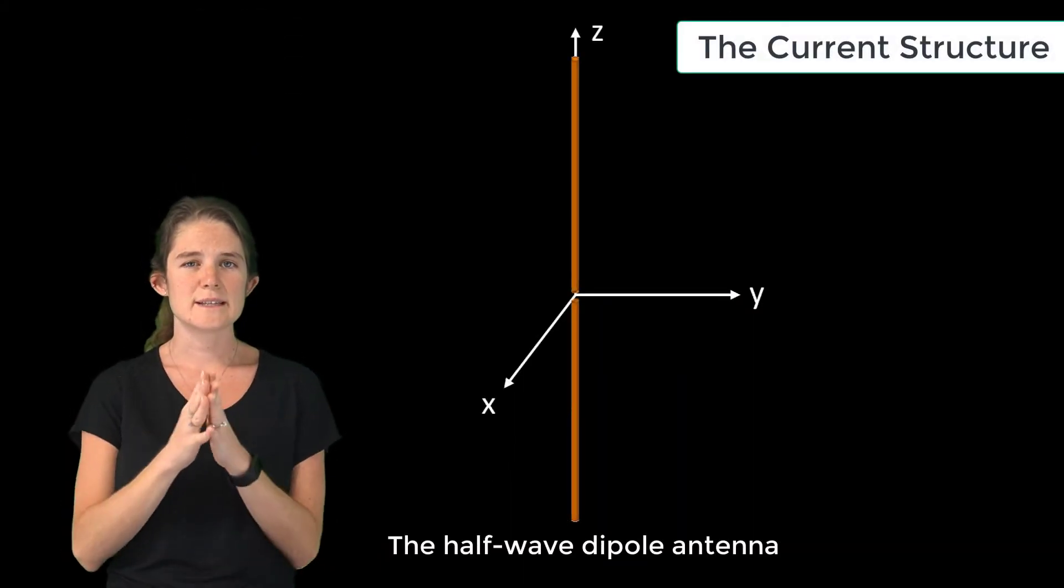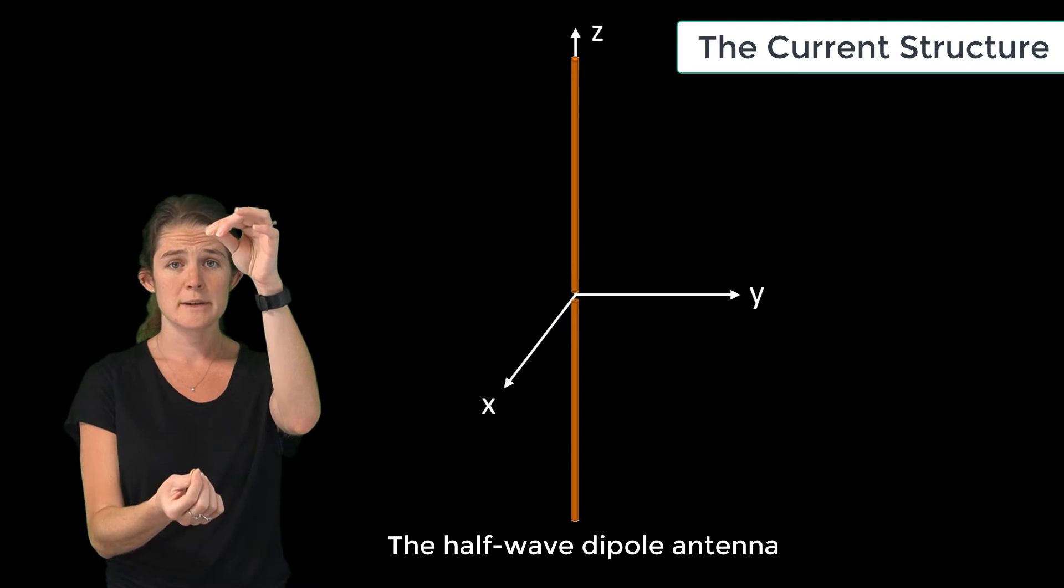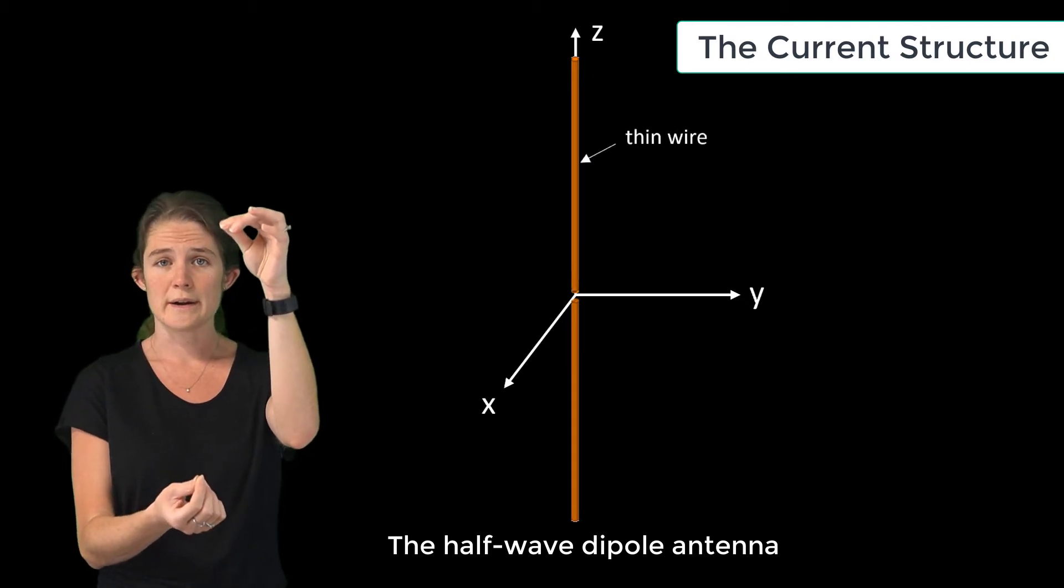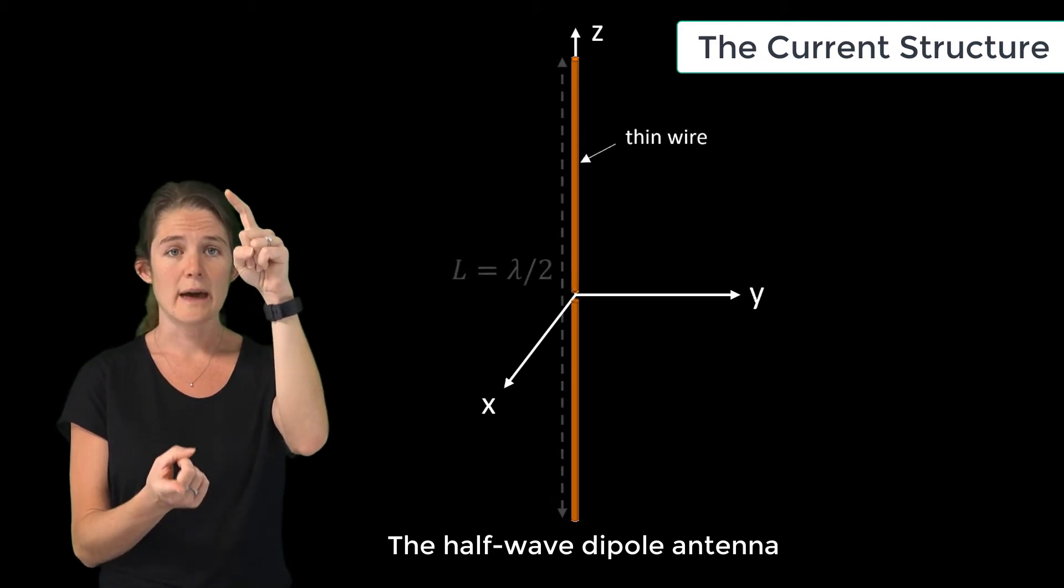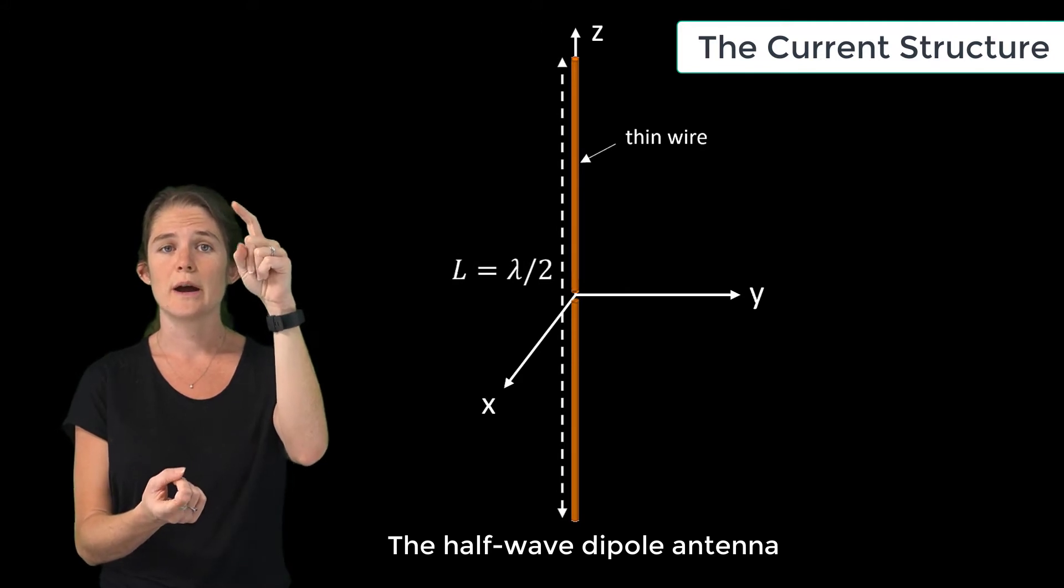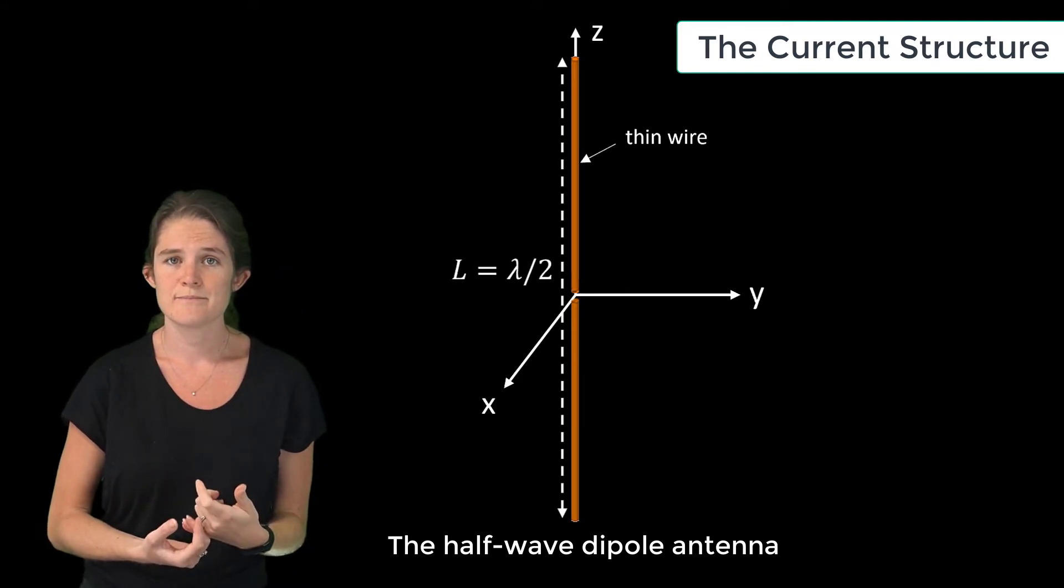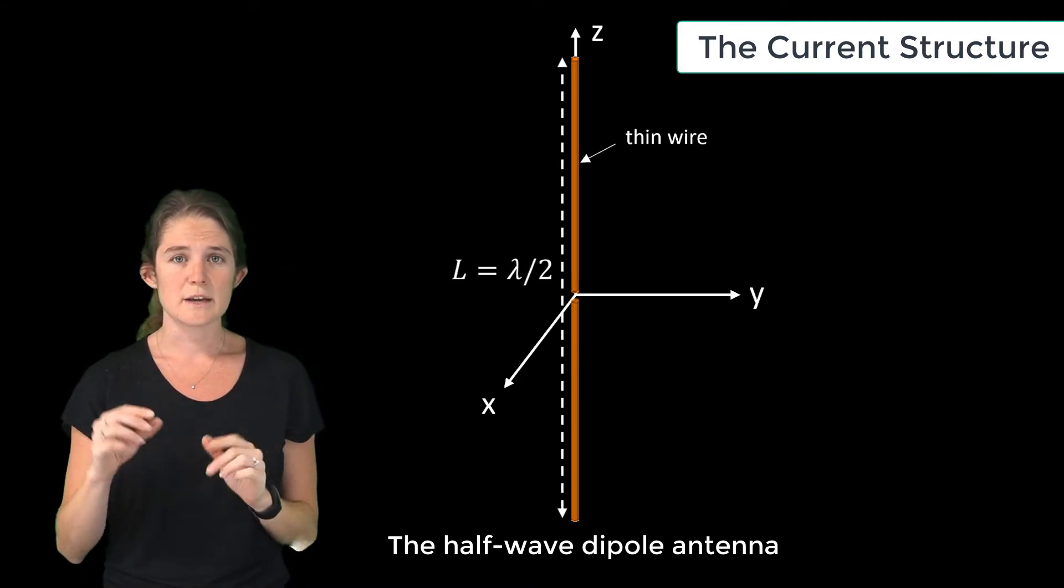A half-wave dipole antenna consists of a linear conductive element, usually formed of a thin wire, having a total length L equal to lambda over 2 at the target frequency of operation. This antenna is typically fed by means of a voltage signal applied across a gap.